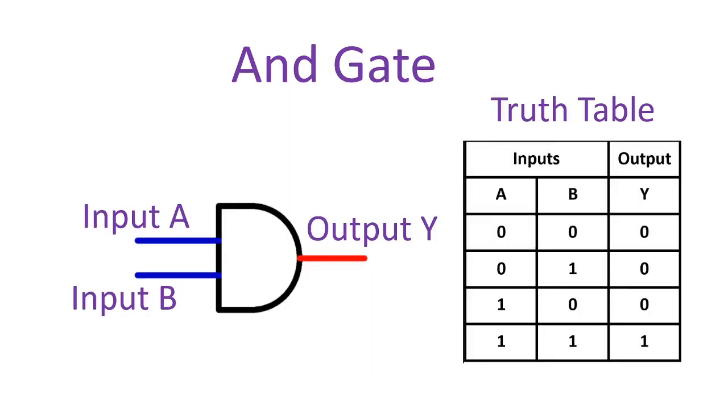And for the AND gate, it behaves according to truth table. The output of AND gate is 1 if both input A and B are 1. Otherwise, it's 0.